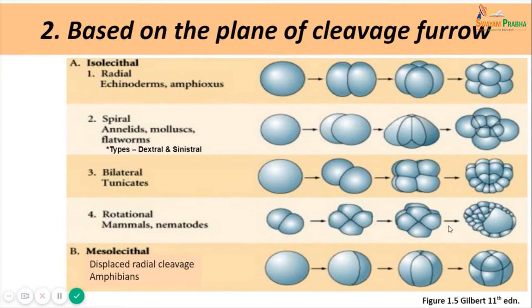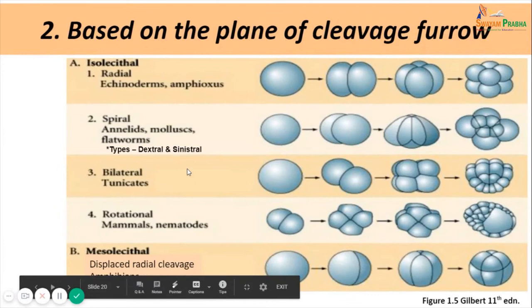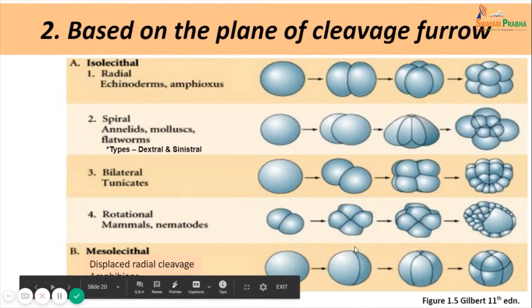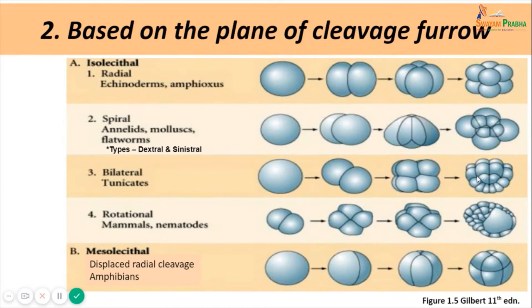The fifth type is displaced radial cleavage, seen in amphibians. The mesolecithal eggs of amphibians undergo displaced radial cleavage in which the first two cleavages are meridional, but the third cleavage is not equatorial — it is latitudinal, slightly above the equator as in unequal holoblastic cleavage. After the third cleavage, the upper tier consists of smaller micromeres and the lower tier of larger macromeres. This will be studied in detail during the unit on gastrulation in Xenopus in the next lecture.